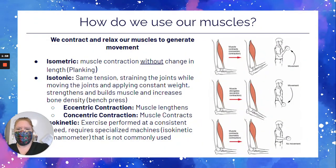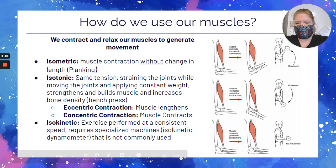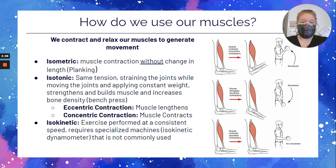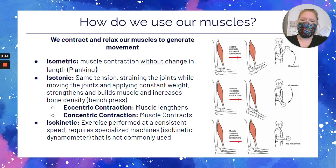The next category involves looking at isometric, isotonic, and isokinetic. Isometric still means the same thing — it's just used in two different categories. Isometric is still muscle contraction without a change in length, so think planking.